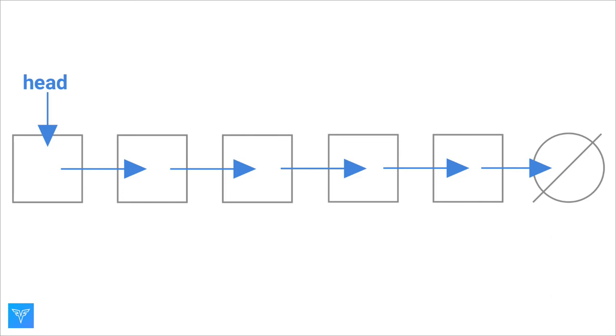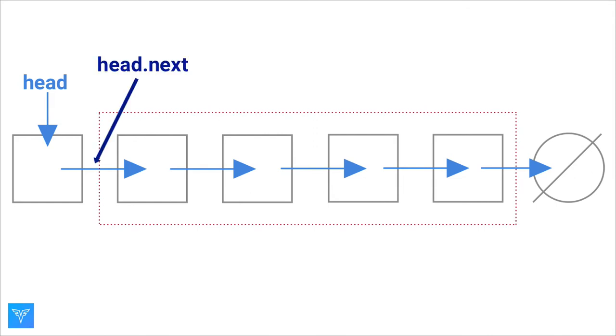We will show two different approaches to reversing a linked list, a recursive one and an iterative one. For the recursive function, we note that the nodes in the red box are a linked list. The pointer to the first node in this case is head.next. If we had a reverse function, we could call it on head.next to get the new head at the end of the linked list.